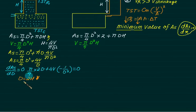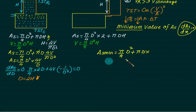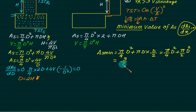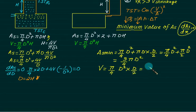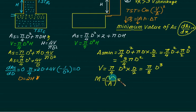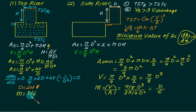Substituting D = 2H (i.e., H = D/2) back into the surface area: A_s(min) = (π/4)D² + πD×(D/2) = (π/4)D² + (π/2)D² = (3π/4)D². This is the minimum area for the top riser. The corresponding volume is V = (π/4)D² × (D/2) = (π/8)D³. The modulus for the top riser is M = V/A_s = (π/8)D³ / (3π/4)D² = D/6. So for the top riser, the modulus equals D/6.